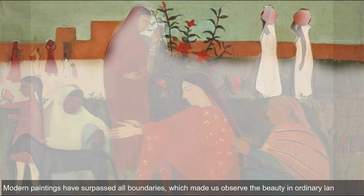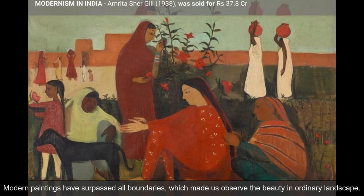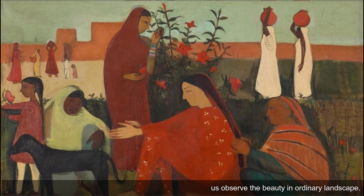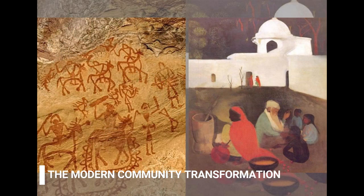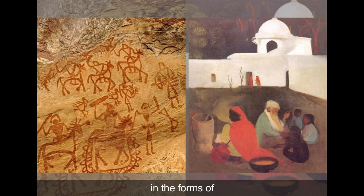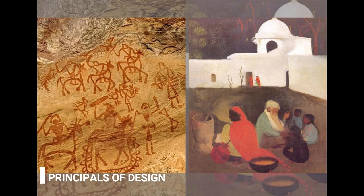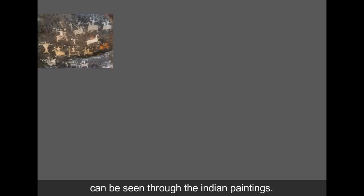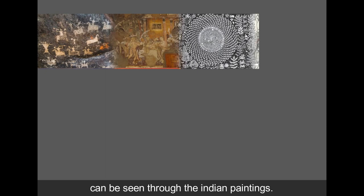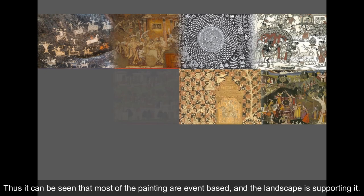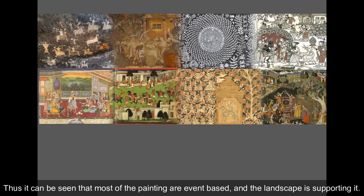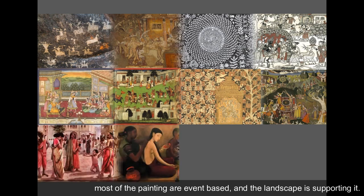In the modern era, paintings show individuality and a belief in minimalistic architecture. Modern paintings have surpassed all boundaries, making us observe the beauty in ordinary landscape. The modern community transformation in forms of 2D to 3D, colours, mediums, expressions, styles, and principles of design can be seen through Indian paintings. Thus, it can be seen that most paintings are event-based and the landscape is supporting it.